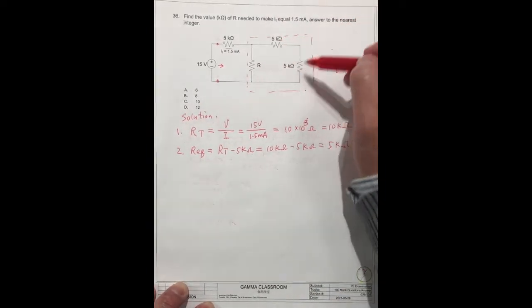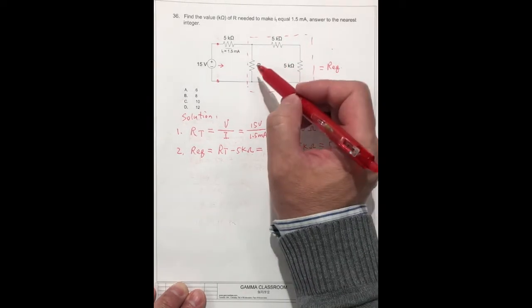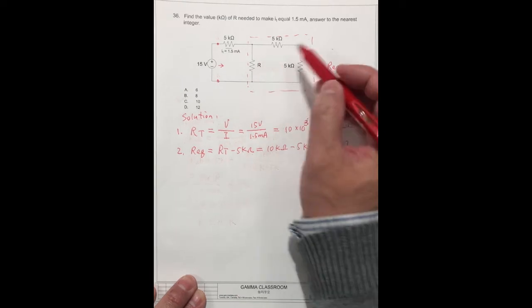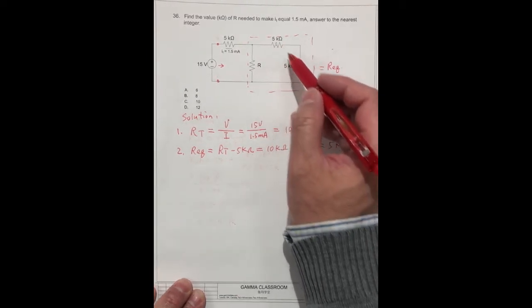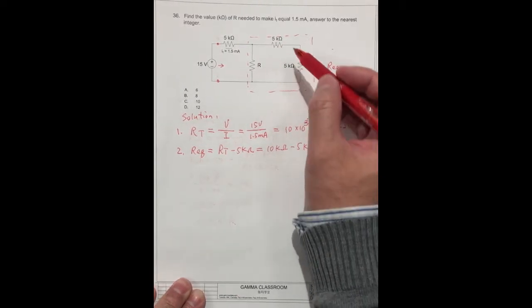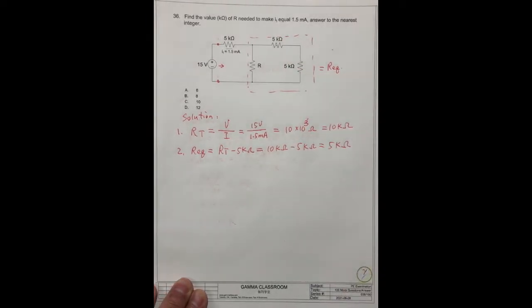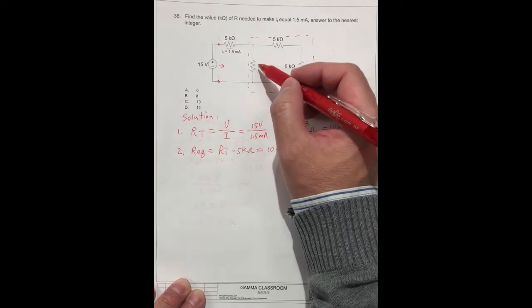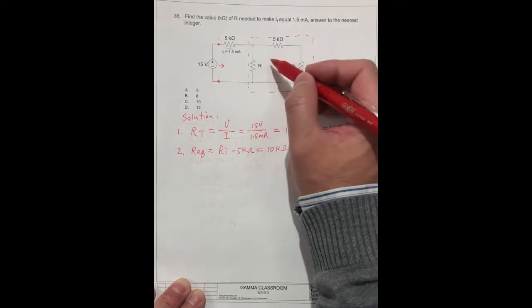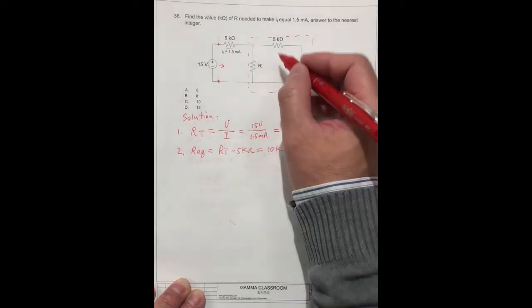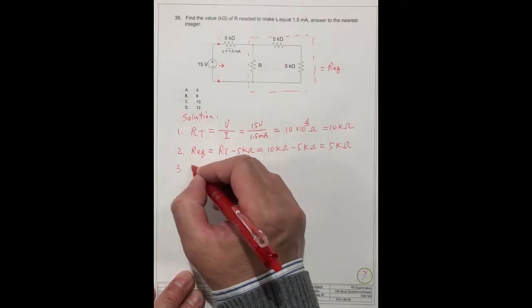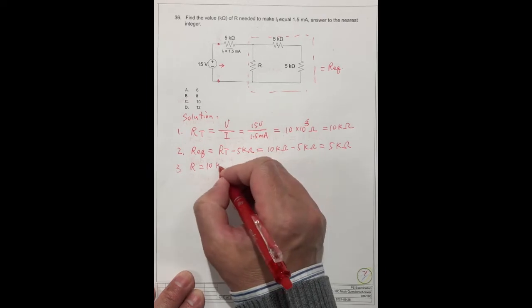these two resistors in series connection with this R in parallel connection. If you can do the calculation, you don't need to do any formula. Because this is 5 plus 5 equal to 10, and the total should be equal to 5. Just this one equal to 10, we can get the total equal to 5. So R, you can think R is equal to 10 kilo-ohms.